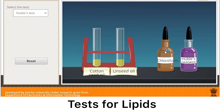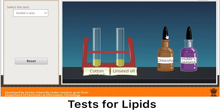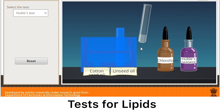We are down to our last test for lipids — the Hubl's test — which is a test for determining the unsaturation of lipids. For this test, we will be needing chloroform and Hubl's reagent, and our samples will be linseed oil and cotton oil. We will be adding about 3 ml of chloroform in each oil sample and then shake to mix well. Then we will add about 3 to 4 drops of Hubl's reagent and observe the fading of the violet color in the test tubes. Record your observations.